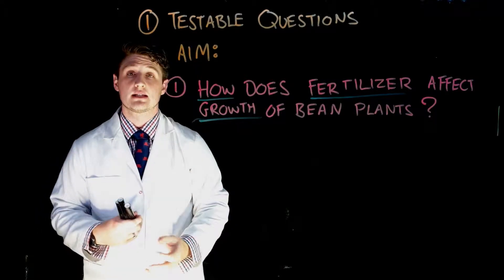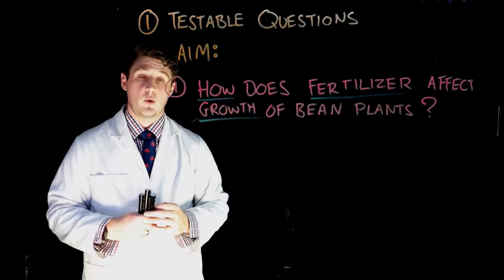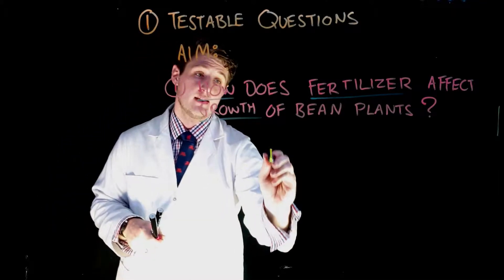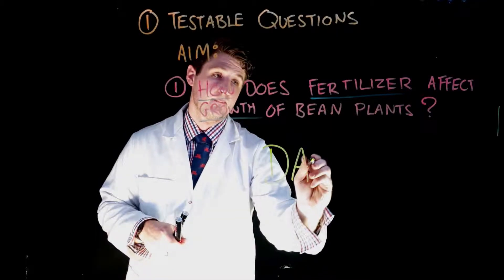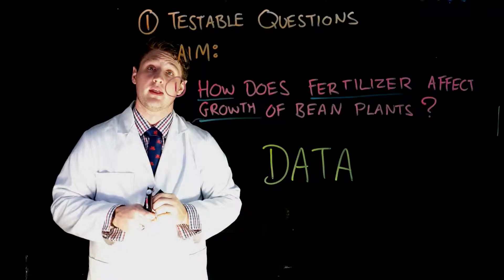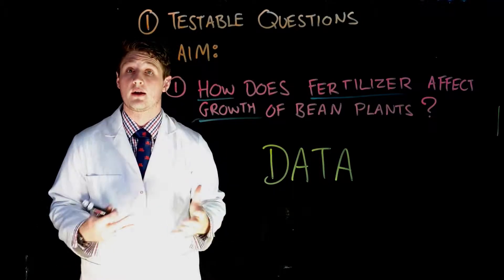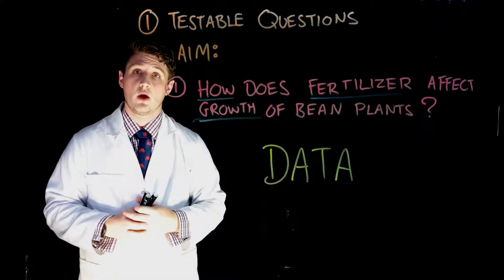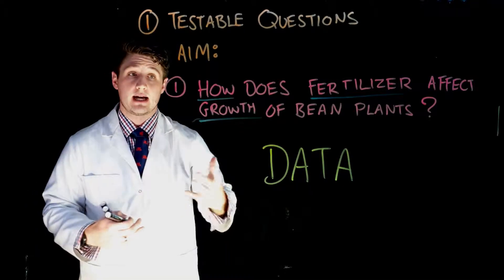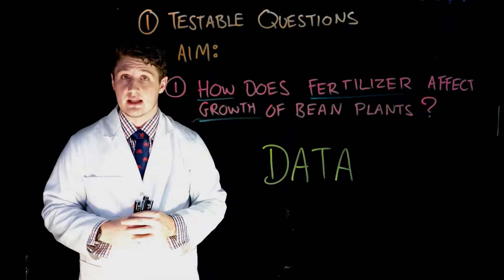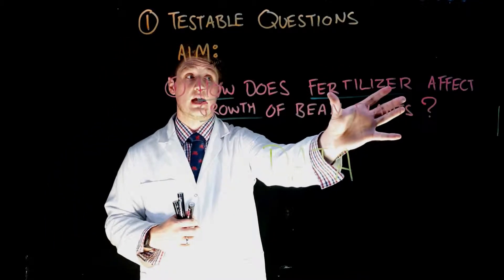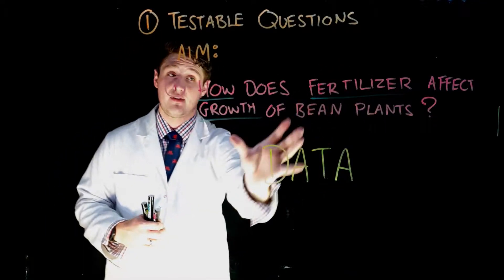The most important part of a testable question is that you can answer it by collecting data. Without data we can't justify why we have sided one way or another with our answers. Data is what gives us clear evidence that we have worked out whether or not, in this case, fertilizer affects our plants.